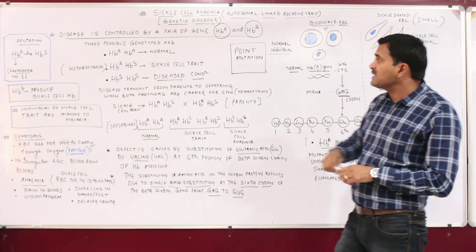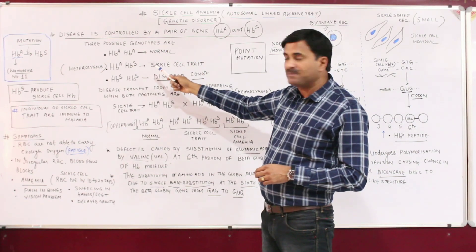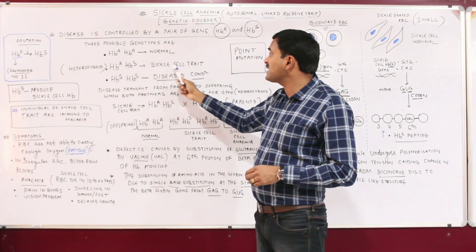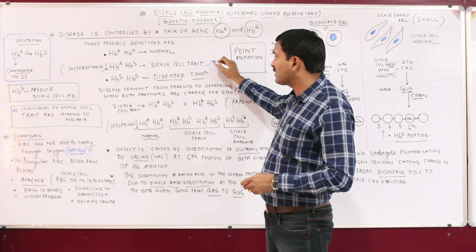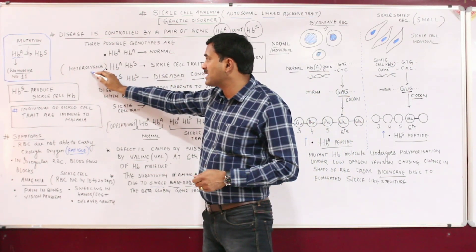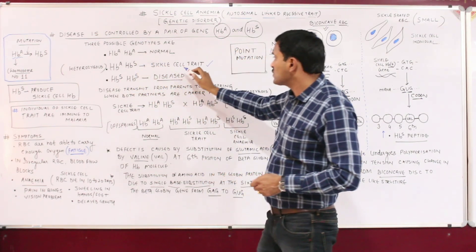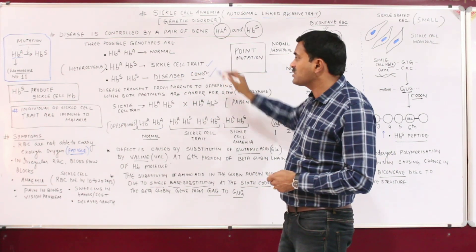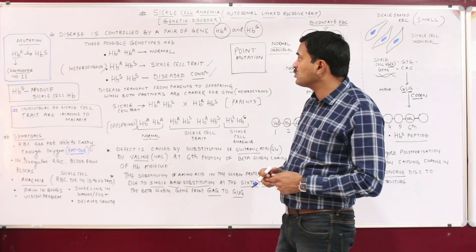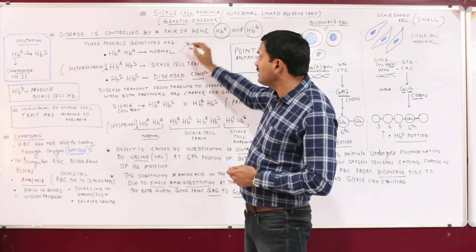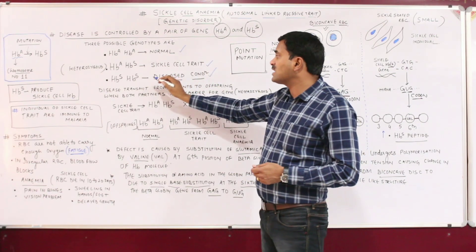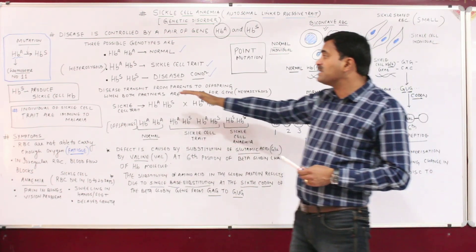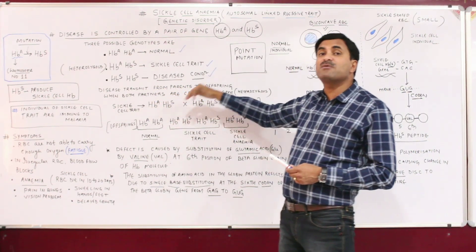There are three possible genotypes. HbA HbA is the normal genotype. HbA HbS is the sickle cell trait — this is a very important point. It is a heterozygous condition, heterozygous for HbA and HbS, so this is called the sickle cell trait. HbS HbS is the disease condition which causes sickle cell anemia. So: HbA HbA is normal, HbA HbS is sickle cell trait, and HbS HbS is the diseased condition.